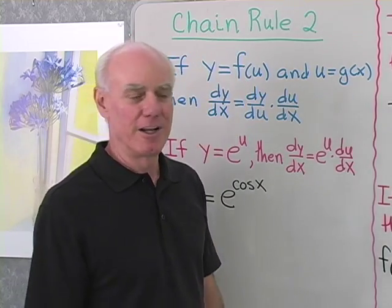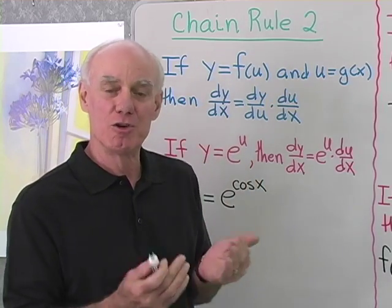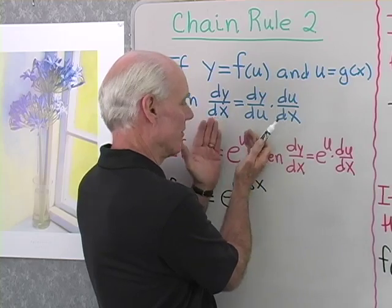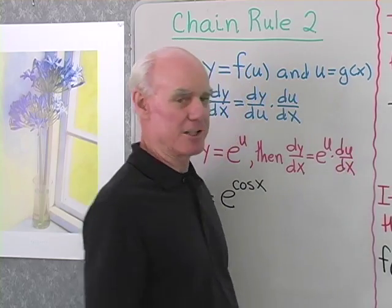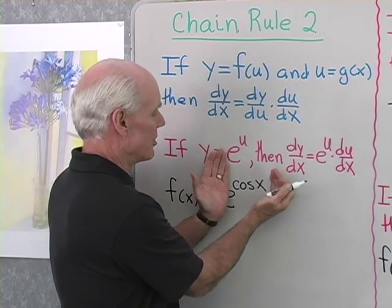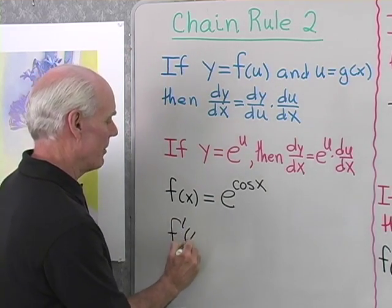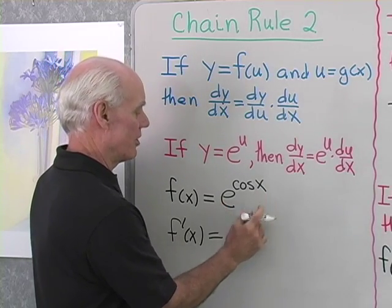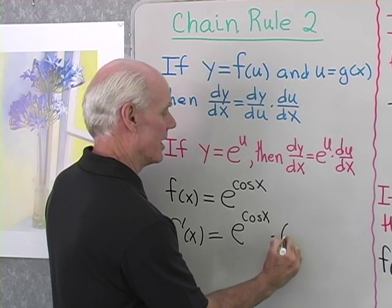In actual practice, it's a little easier than that. For instance, if we have y equal to e to the u, where u itself is a function of x, then the derivative of y with respect to x is just the derivative of this with respect to u, which is e to the u, times the derivative of u with respect to x. So, if f of x is equal to e raised to the cosine x power, then f prime of x is: I differentiate e to the cosine x and get e to the cosine x, then I differentiate cosine x and get negative sine x.